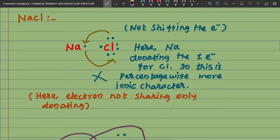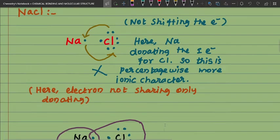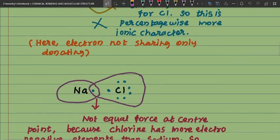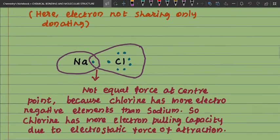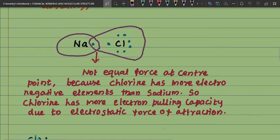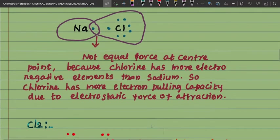Here the electron is not sharing — only donating. This is not equal force at the center point, because chlorine is a more electronegative element than sodium. So chlorine has more electron-pulling capacity due to electrostatic force of attraction — this is the cause.